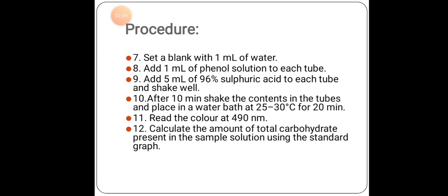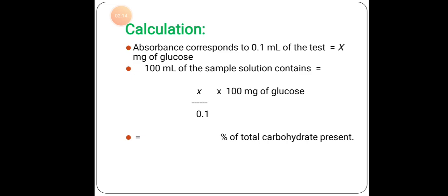Calculate the amount of total carbohydrate present in the sample solution using the standard graph. Coming to calculation: absorbance corresponds to 0.1 ml of test is equal to x mg of glucose. 100 ml of the sample solution contains x divided by 0.1 into 100 mg of glucose. That gives the percentage of total carbohydrate present in the sample.